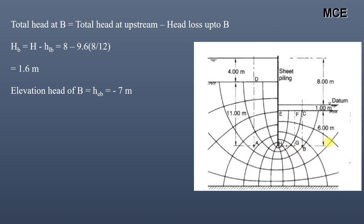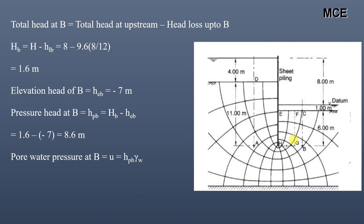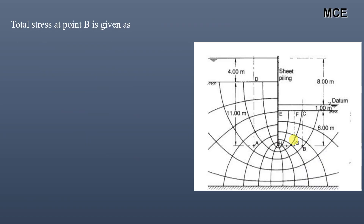The elevation head of point B is minus 7 meters, as the distance of point B from the datum is 7 meters in the downward direction. The pressure head at point B equals total head minus elevation head, which is 1.6 plus 7, equal to 8.6 meters. The pore water pressure at point B is pressure head times unit weight of water, which equals 8.6 times 9.81, equal to 84.37 kilo Pascal.